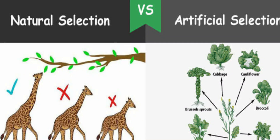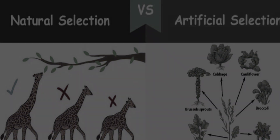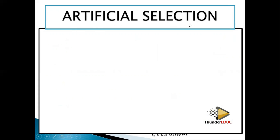Welcome back to our class. Don't forget to subscribe if it's your first time visiting our channel. Let's look at artificial selection. We have talked about natural selection, where nature selects which organism is best suited to the environment. But in artificial selection, it is the human who selects which ones are supposed to continue — which characteristics are needed.